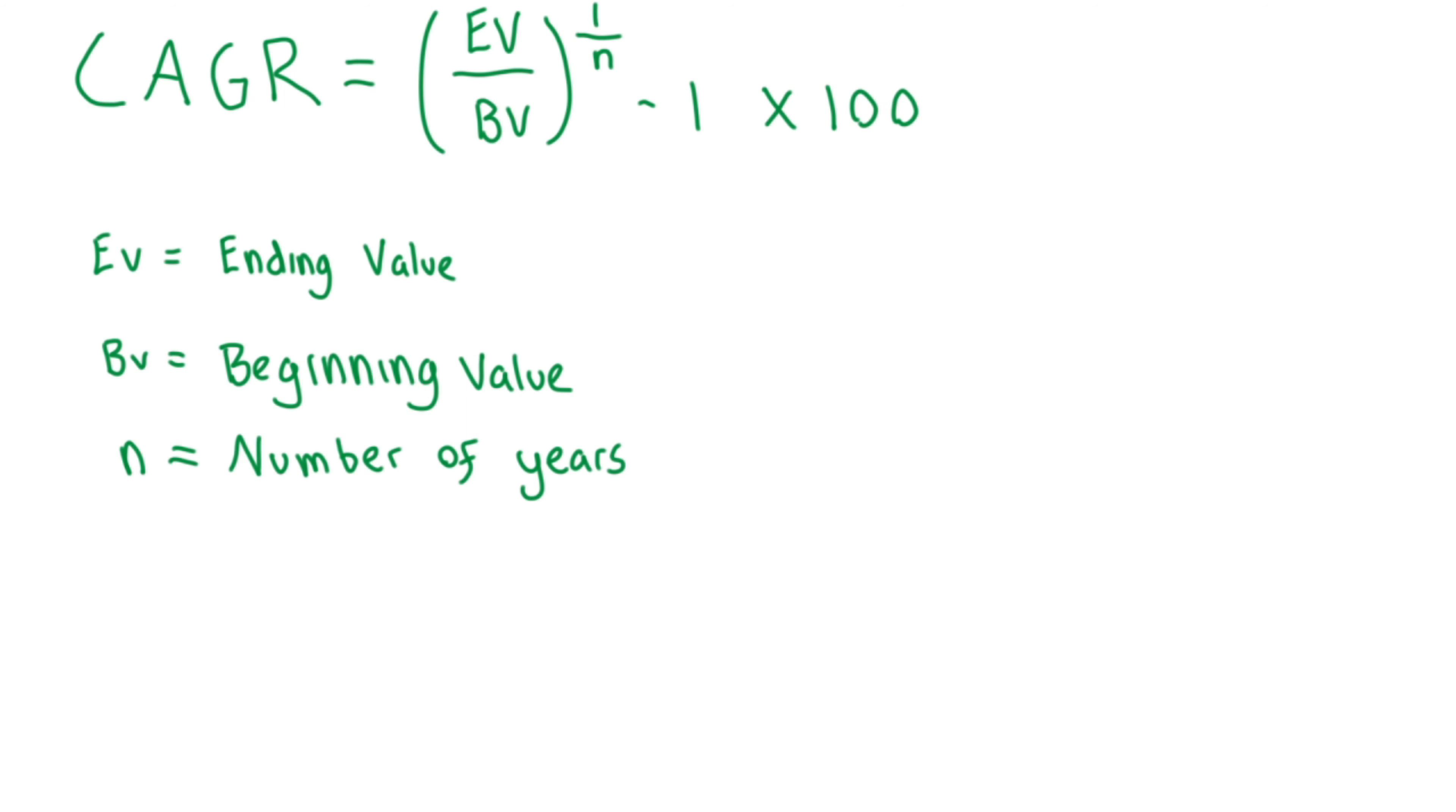Let's break this down. We divide the value of an investment at the end of the period we're examining, for example, the present day or some other date in the past, by its value at the beginning of that period, which is any other date before the end period. We then raise the result to an exponent of 1 divided by the number of years.